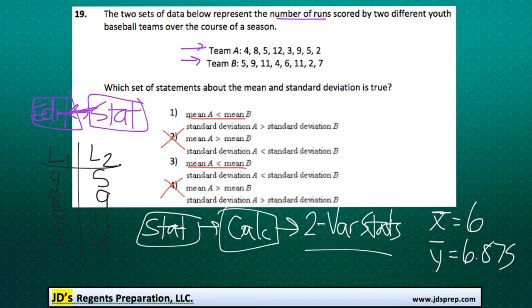Now looking back at the calculator, the standard deviation of x, which looks like this symbol, is 3.16 if we round it, and the standard deviation of y, if we scroll down again, should be 3.06.